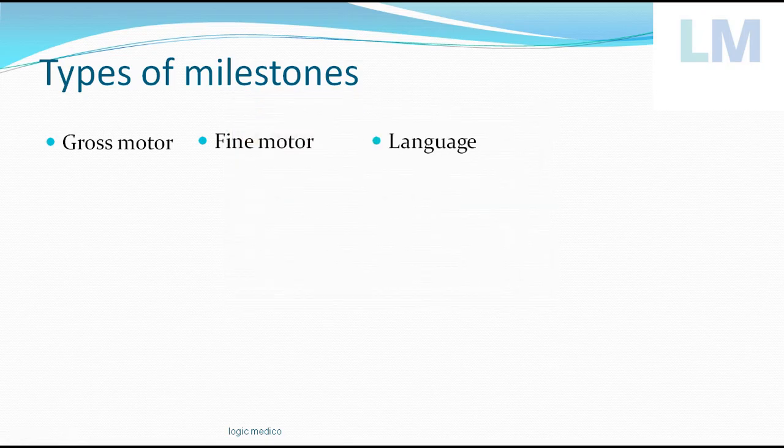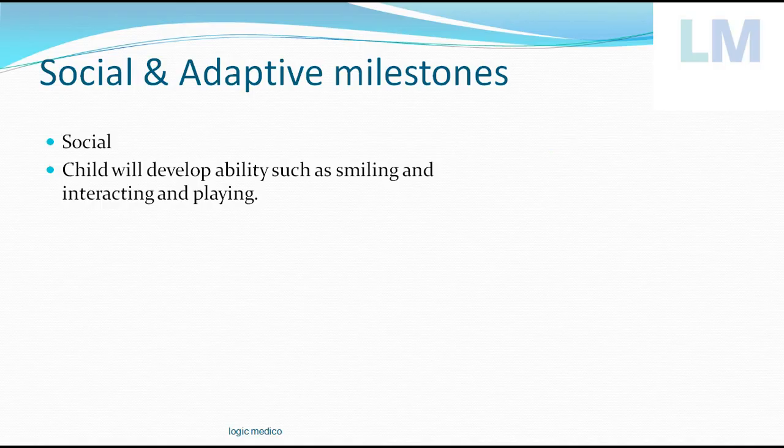Language milestone refers to how the child interacts with the mother and other family members and siblings — communicating by learning the regional language first, with the mother as the first teacher. The social milestone is one in which the child interacts to develop an adaptive skill to live in the social environment. That is what we are learning today — the ability of a child to interact with its surroundings based on the stimulus given by the environment.